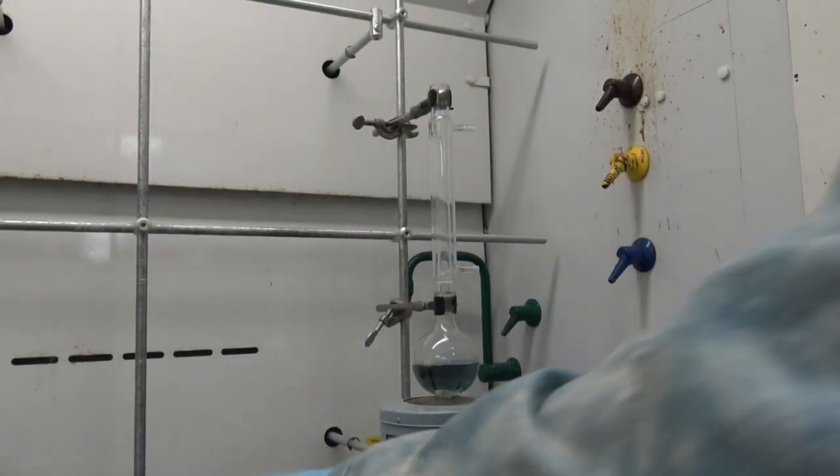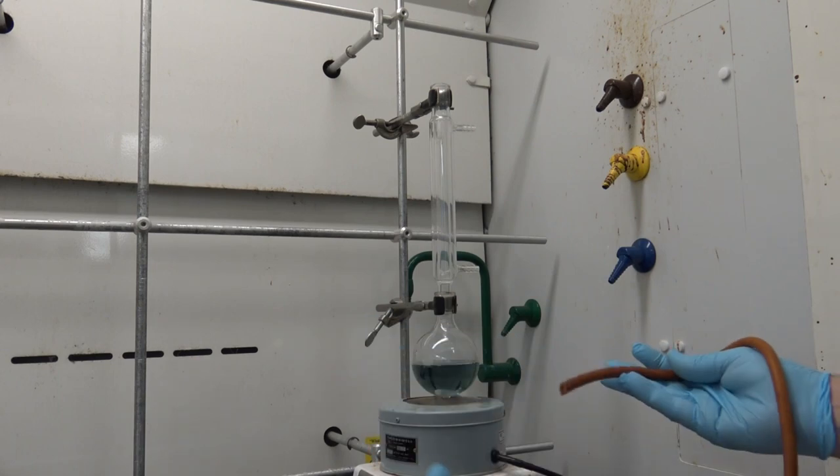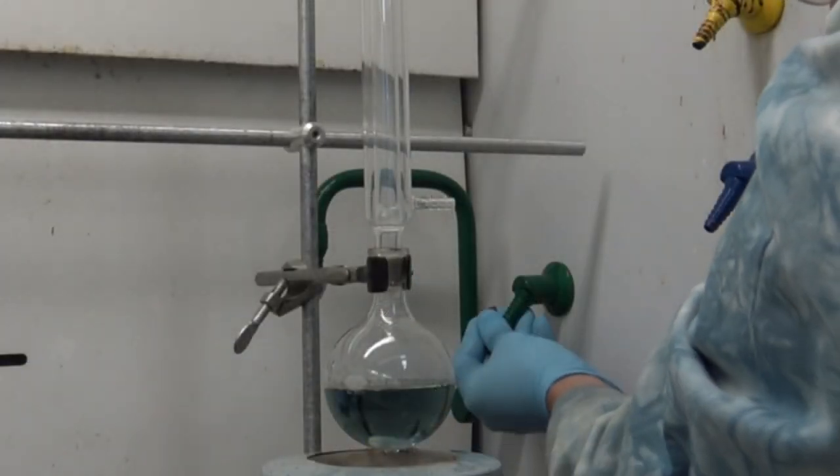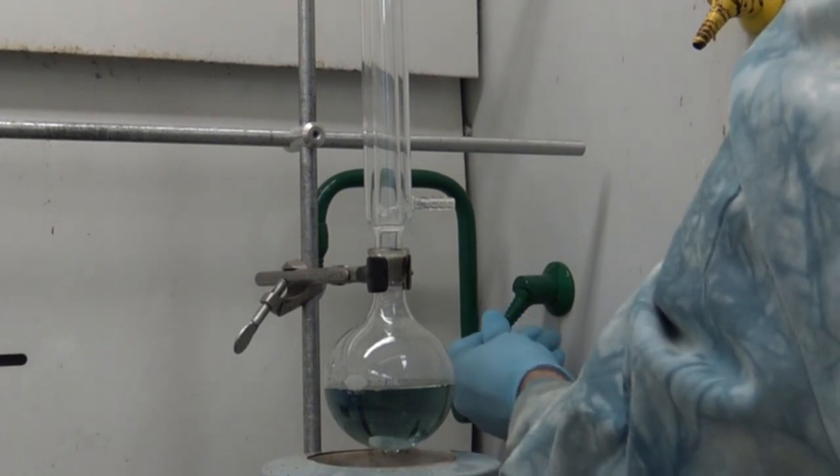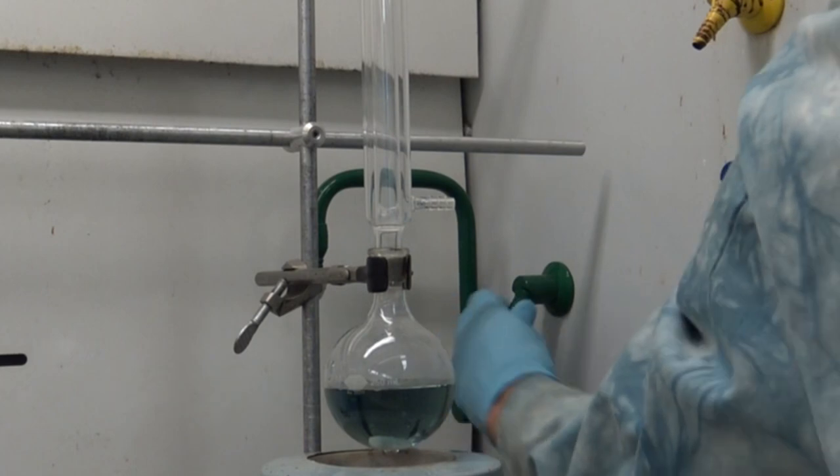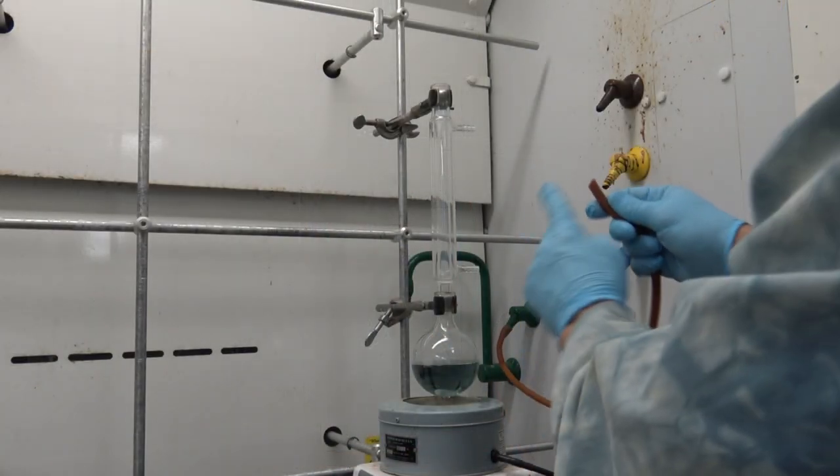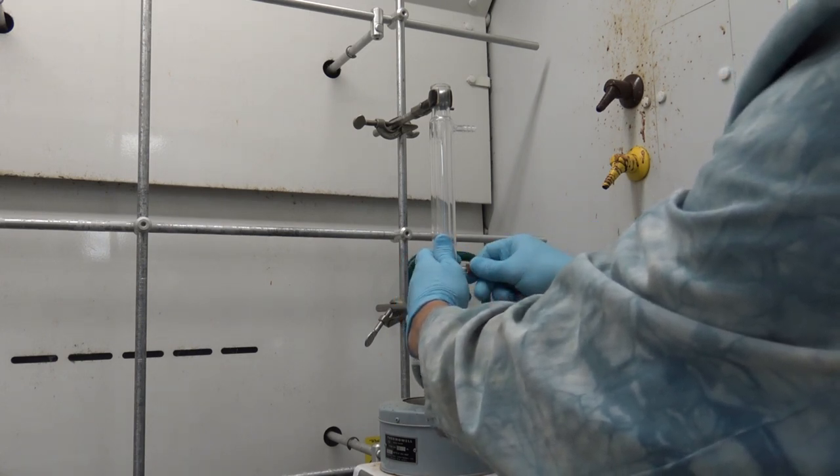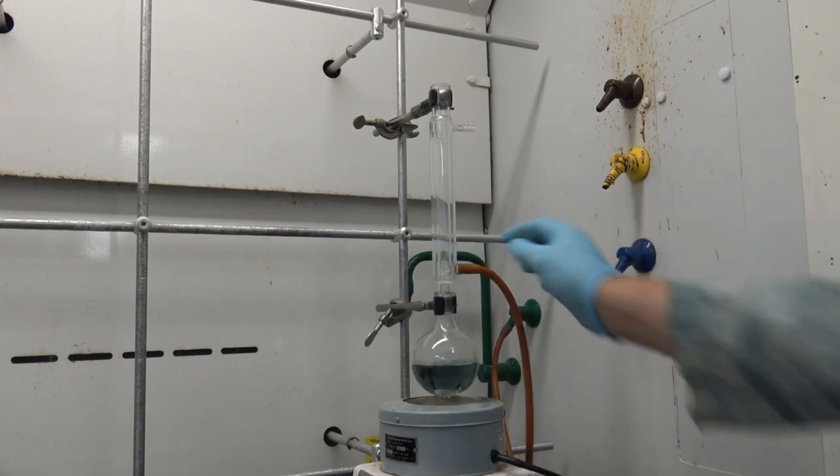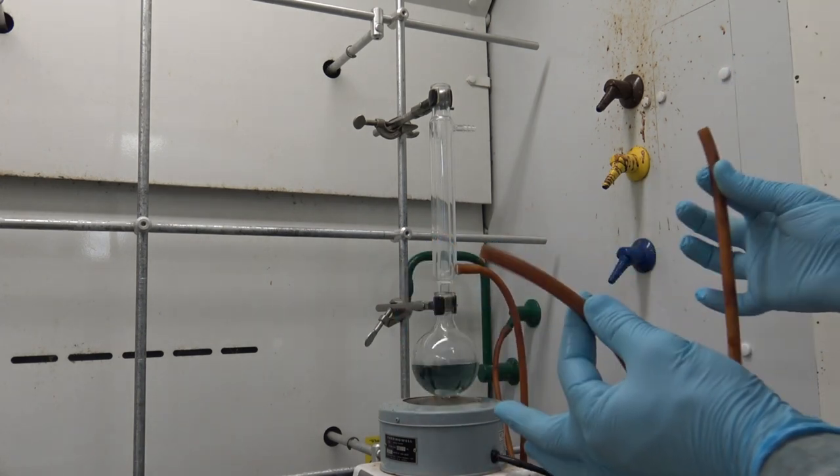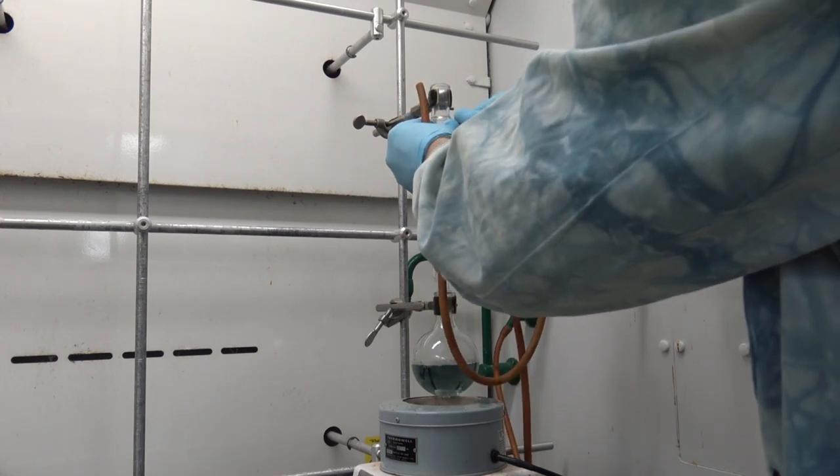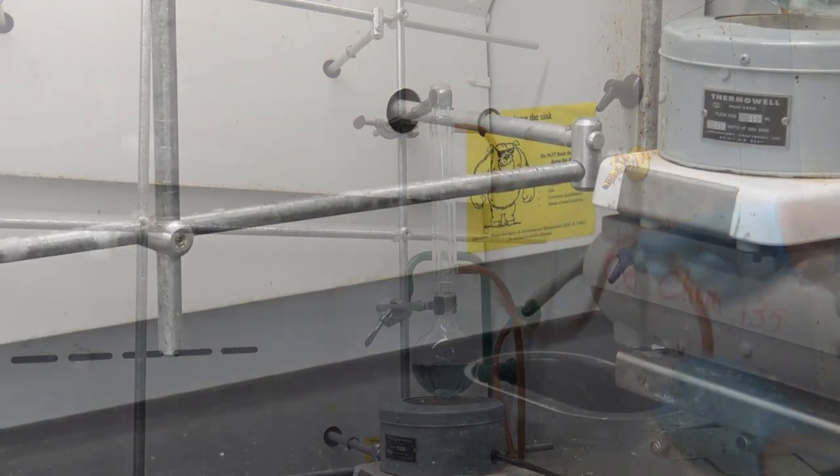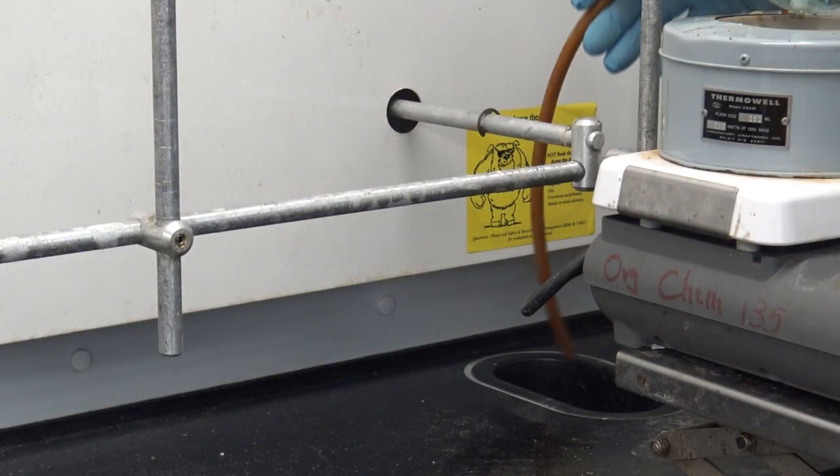Now it's time to ensure that the Liebig condenser remains cold. To do this, I'm going to place a piece of hose over my water source, and I'm going to run that hose from the water source to the hose barb on my condenser at the base. This is very important. The source has to go to the lower of the two hose barbs. This will ensure that the water completely fills the jacket when it's turned on. But before I turn it on, I have to give the water somewhere to go. So I'm going to use my second piece of hose to attach the upper hose barb to a hose running to the cup sink for drainage. So I'll place that hose now in the cup sink in the back of my fume hood.